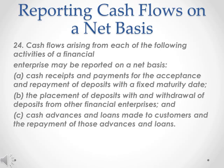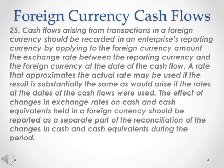Reporting cash flows on a net basis, Paragraph 24. Cash flows arising from each of the following activities of a financial enterprise may be reported on a net basis: A. Cash receipts and payments for the acceptance and repayment of deposits with a fixed maturity date; B. The placement of deposits with and withdrawal of deposits from other financial enterprises; and C. Cash advances and loans made to customers and the repayment of those advances and loans.